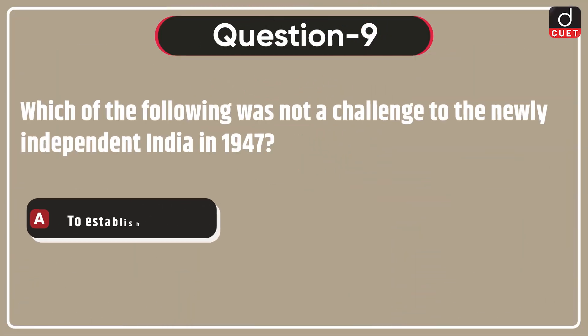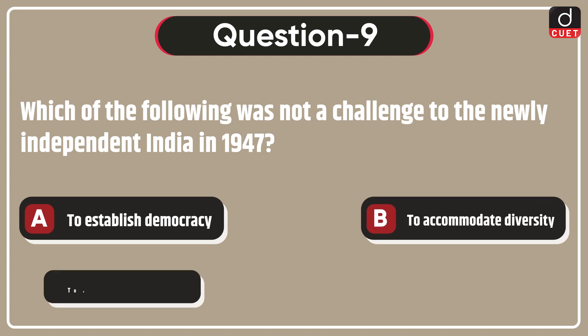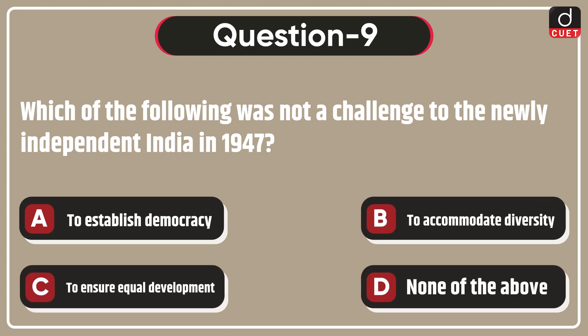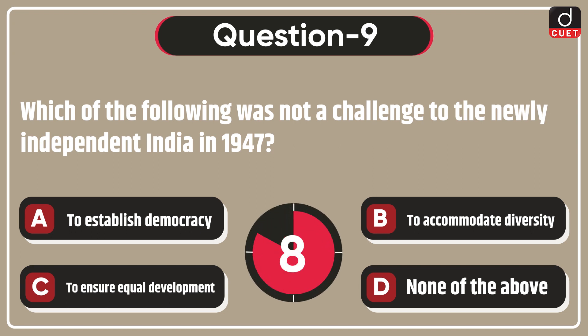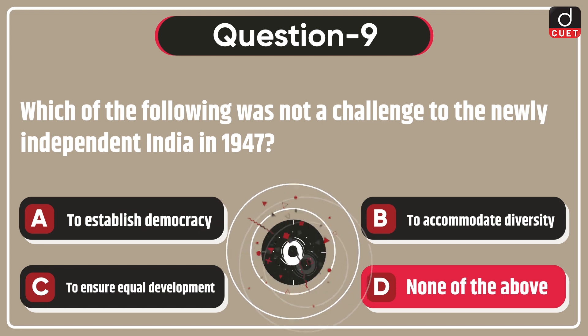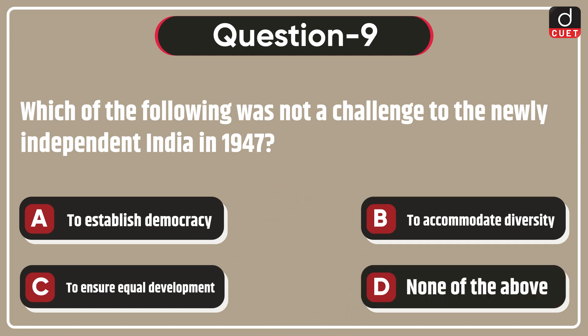Next question is, which of the following was not a challenge to the newly independent India in 1947? To establish democracy, to accommodate diversity, to ensure equal development, or none of the above? The correct answer is option D, none of the above.